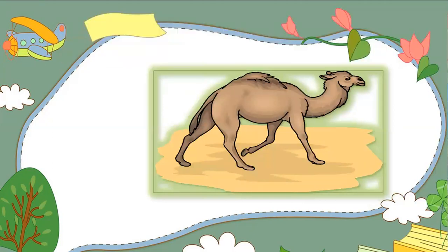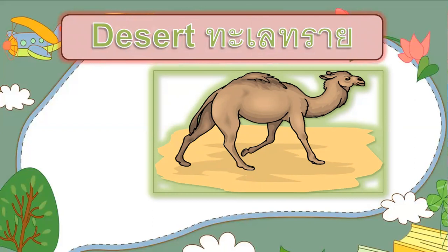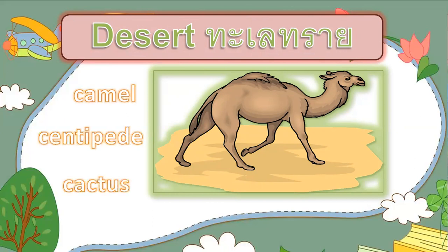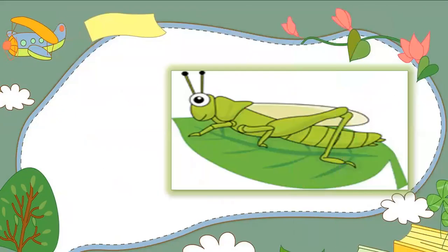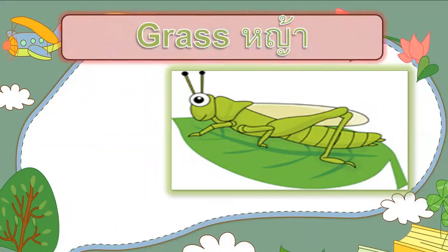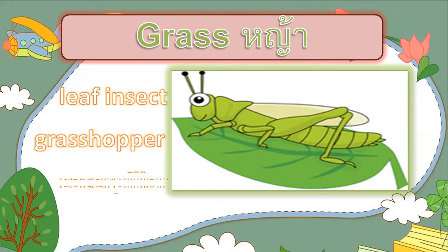How about camel? What habitat does camel belong to? Desert. What other animals live in the desert? Camel, centipede, and also plants — we have cactus. These living things live in the desert. How about grasshopper? The habitat is grass. Other animals that live in grass are leaf insect, grasshopper, and caterpillar. These animals live in or on grass.